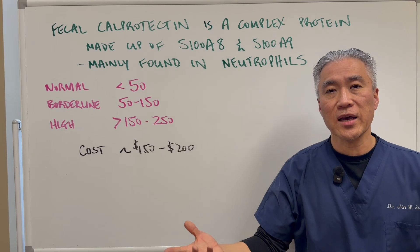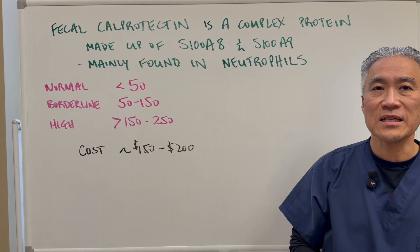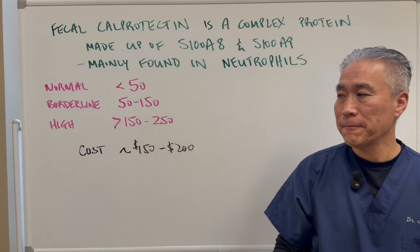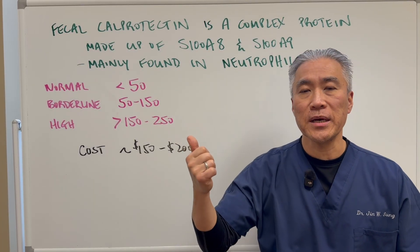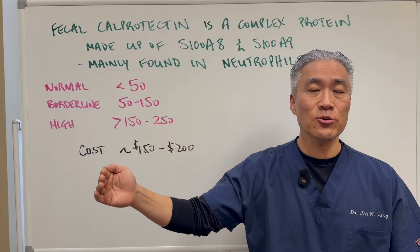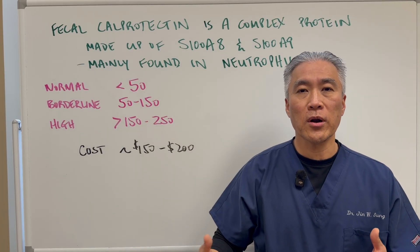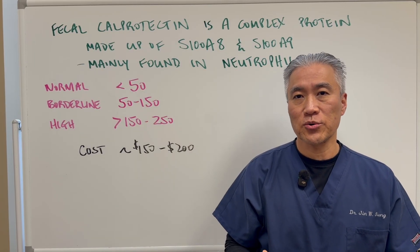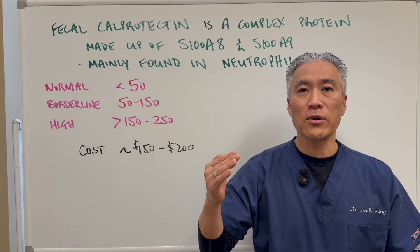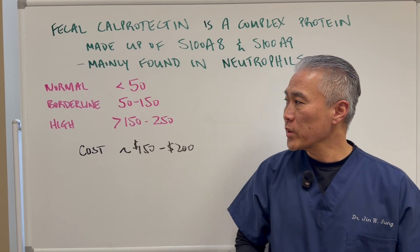When you do the fecal calprotectin test, here are the ranges: normal is less than 50, borderline is 50 to 150, and anything above 150 is considered high. I've seen many patients come in and if they had Crohn's disease, the numbers will be up in the hundreds or even the thousands. You can utilize it for monitoring patients who have chronic inflammatory bowel disease — Crohn's, colitis, etc. — to determine whether your treatment is improving that inflammatory marker of the gut.